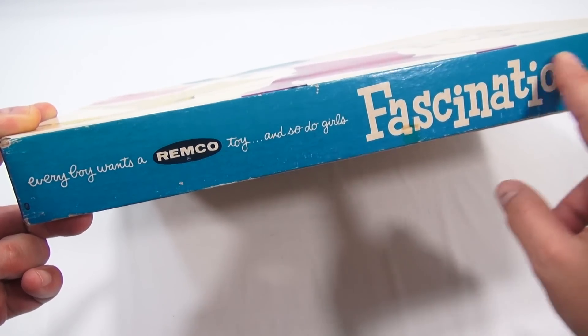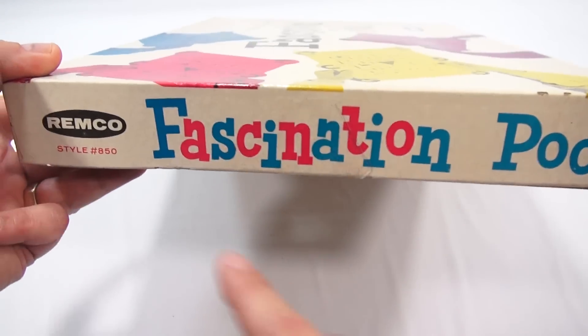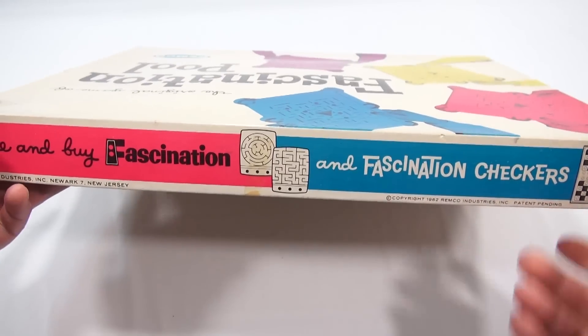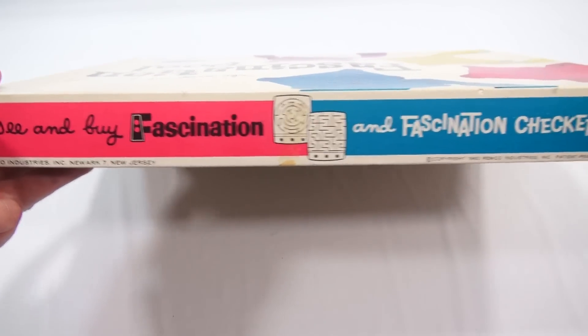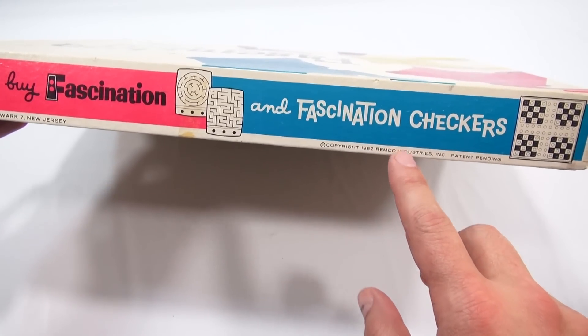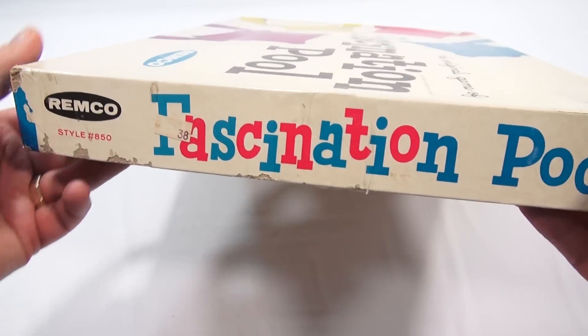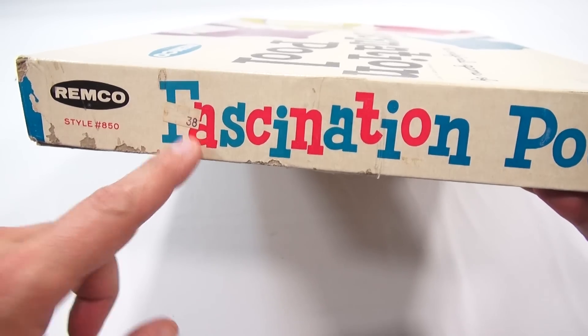This is style number 850, so I'm guessing they had different game boards maybe in 1962. There's nothing on the underside. Look at the original price tag, or stock number, stock number 38.